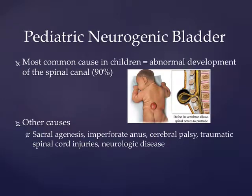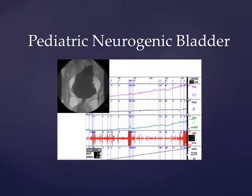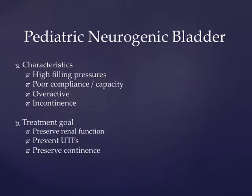In pediatrics, neurogenic bladder is a huge issue. One of the most common causes is myelomeningocele. Other causes are all basically related to some sort of neurogenic abnormality. You have the classic Christmas tree pattern on cystogram, and often urodynamic studies show hostile parameters with high pressures in the bladder. Characteristics include high filling pressure, poor compliance and capacity, overactivity and incontinence. Treatment goals are to preserve renal function, prevent urinary tract infections, and preserve continence if possible.